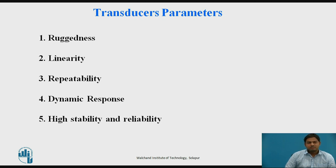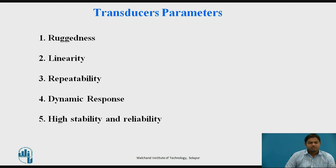Repeatability means that the measurement done today can be expected to be the same tomorrow and the day after. Dynamic response means that if the input to the transducer is changing rapidly, it should still produce a reliable output. Finally, high stability means a large input cannot make the transducer unstable, and it should be reliable.